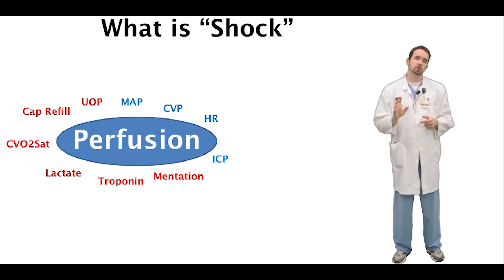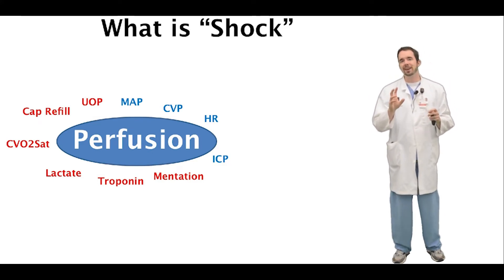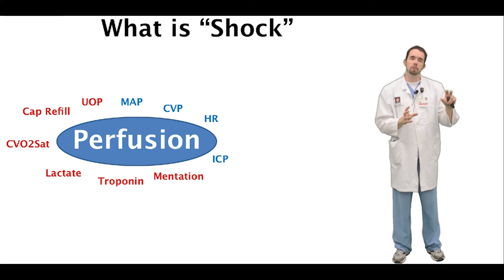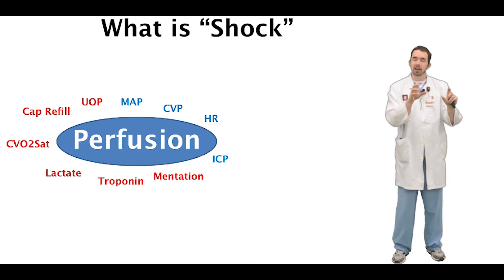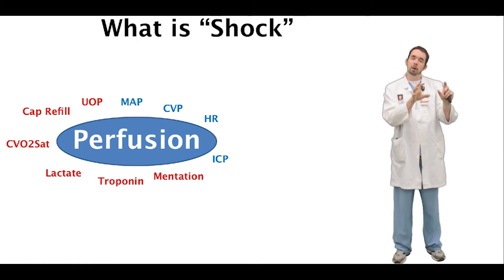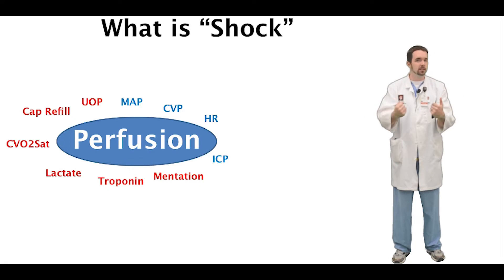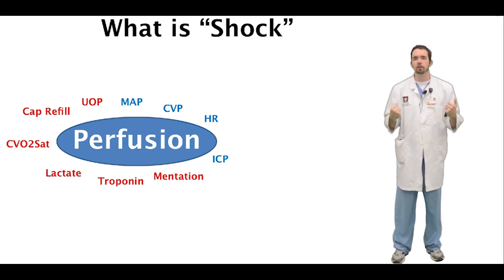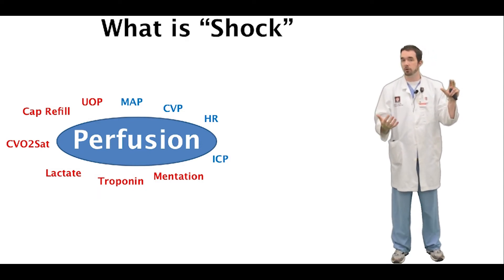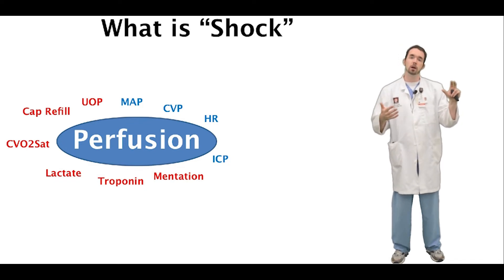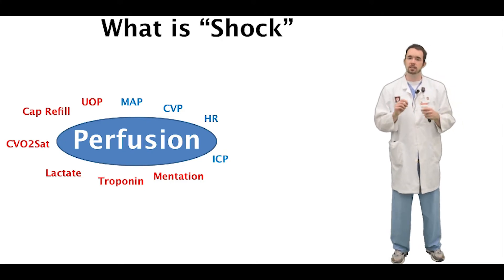Finally, we have the central venous oxygen saturation. This is a unique way to look at the perfusion of the body as a whole. We take blood from the central venous line, typically right before it returns to the heart, and we interrogate that blood to see how much oxygen it had to unload in the tissues of the body. When the tissues are very starved for oxygen, they suck up a lot of the oxygen — they're very aggressively pulling it off. Therefore, when the blood returns back to the heart, it's lost more than 30% of its oxygen in trying to keep perfusion up to the tissues. So a central venous oxygen saturation less than 70% is a sign of malperfusion.